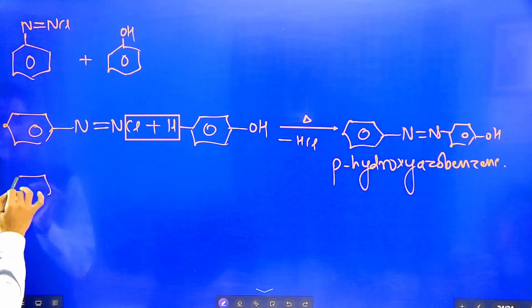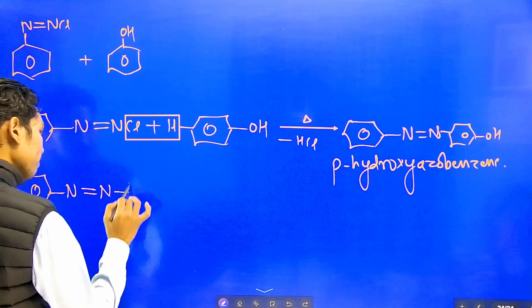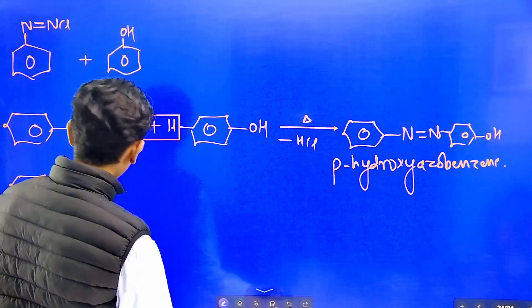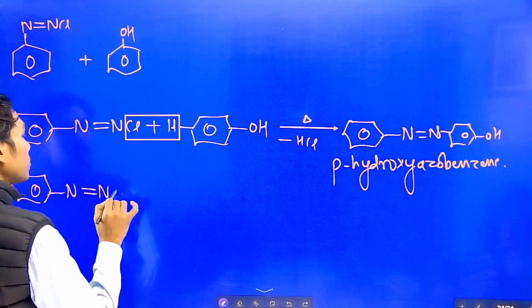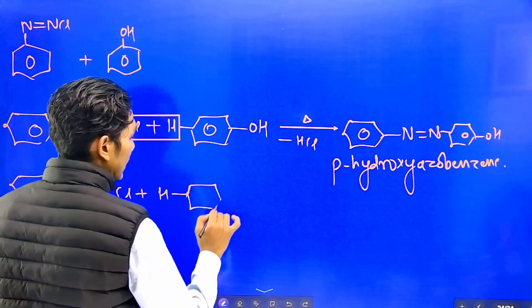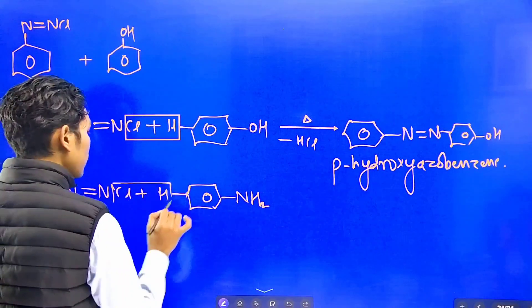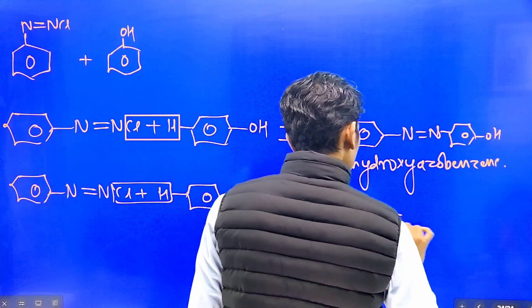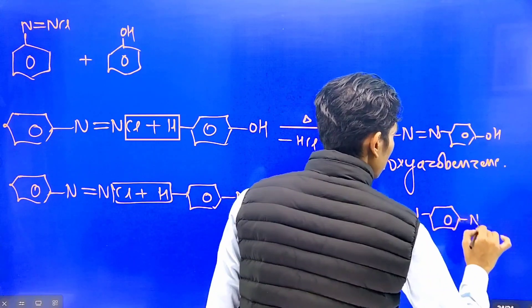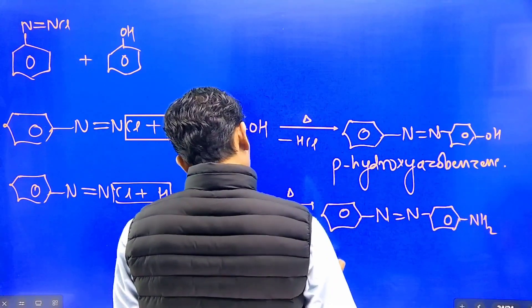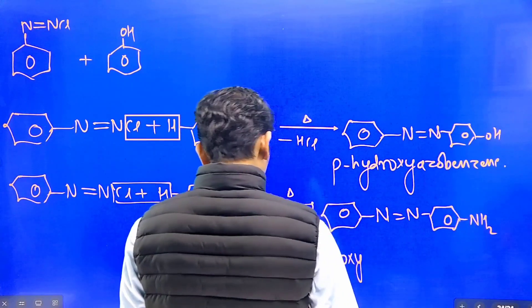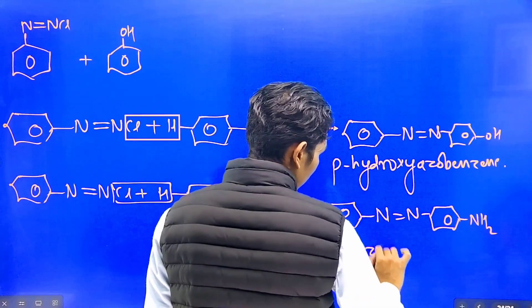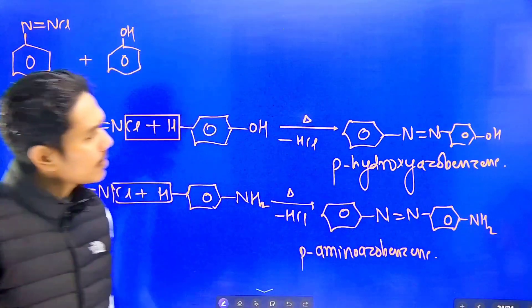When benzene diazonium salt N double bond NCl is reacted with aniline at cool temperature and heated, this gives N double bond N linkage, forming para-hydroxy or para-amino azobenzene.